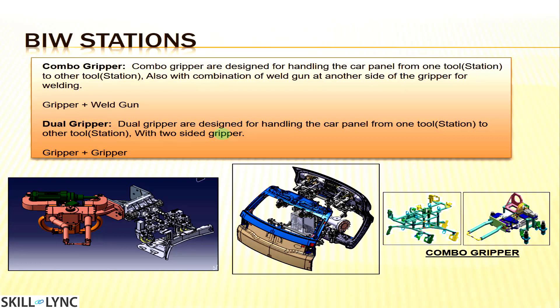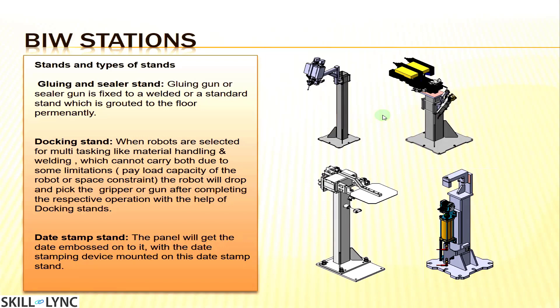A dual gripper is designed for handling the car panel from one tool to another with two-sided grippers — it can hold two panels simultaneously. This is mainly used for side bodies where symmetry requires both LH and RH assemblies. The gripper goes to the LH station, picks the LH part, then goes to the RH station, picks the RH part, and drops both to the center mainline assembly fixture.